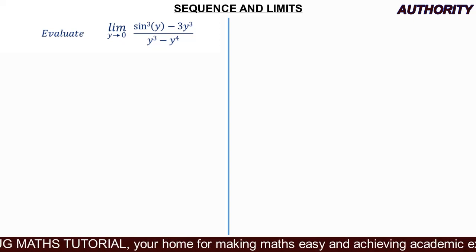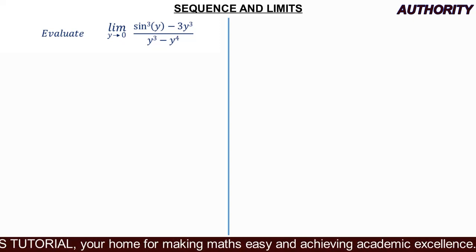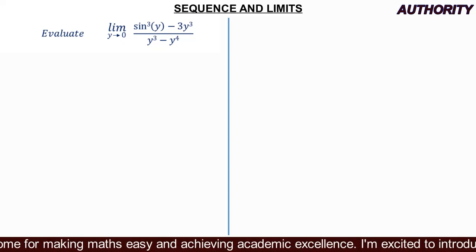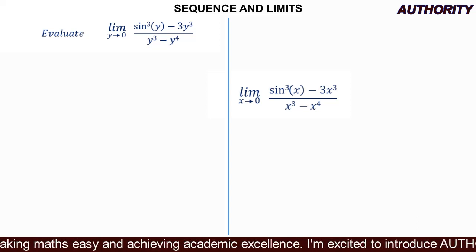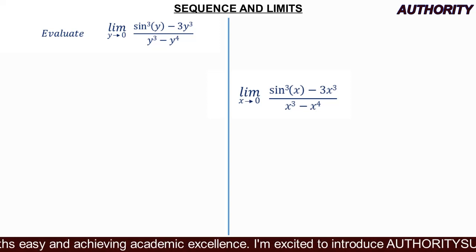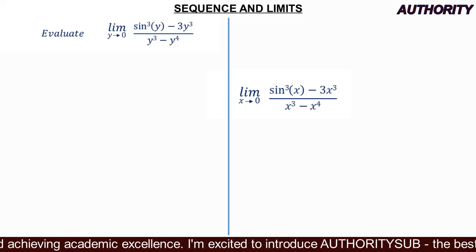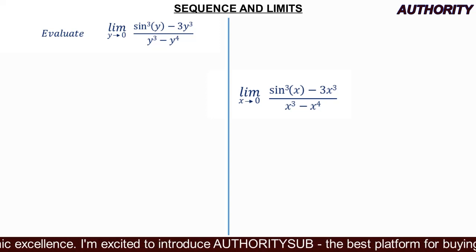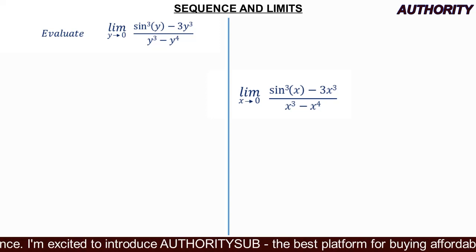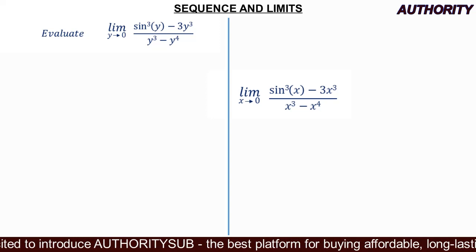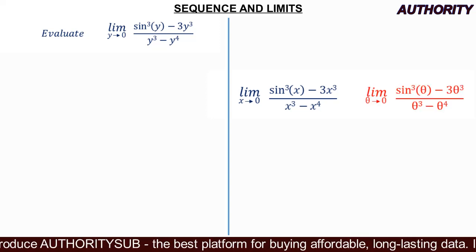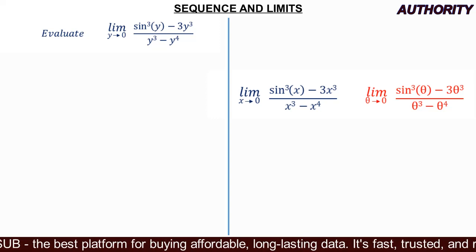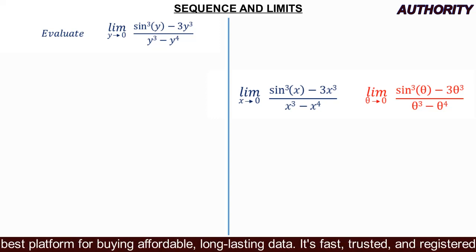This is what we are asked to evaluate. Sometimes the variable may change — instead of y, they may use x: limit as x approaches zero of sine cubed x minus three x cubed, all over x cubed minus x to the power of four. Or they may change to theta: limit as theta approaches zero of sine cubed theta minus three theta cubed, all over theta cubed minus theta to the power of four. It's still the same problem.